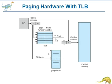If the page number is found, its frame number is immediately available and is used to access the memory — this is called a TLB hit. The whole task may take less than 10% longer than an unmapped memory reference. If the page number is not available in the TLB, it is called a TLB miss.